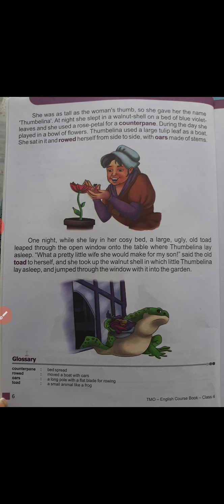Thumblina used a large tulip leaf as a boat. As she was so tiny, she would take a tulip leaf and use it as a wood to swim over the water. She sat in it and rowed herself from side to side — rowed means to move a boat with oars. Oars are long poles with flat blades for rowing. Thumblina used tiny stems as her oars to paddle across the water.